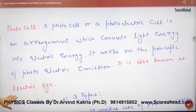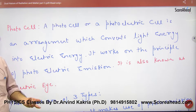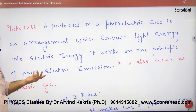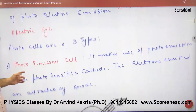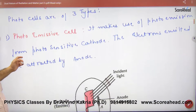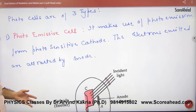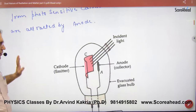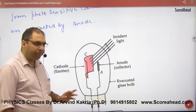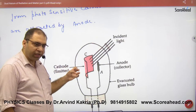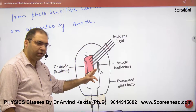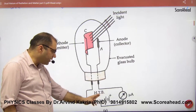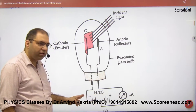It works on the principle of photoelectric emission. The first type of photocell is a photoemissive cell. The basic principle involves a photosensitive plate — photons fall on the plate, electrons are emitted, a positive plate is kept in the circuit, and current is generated.